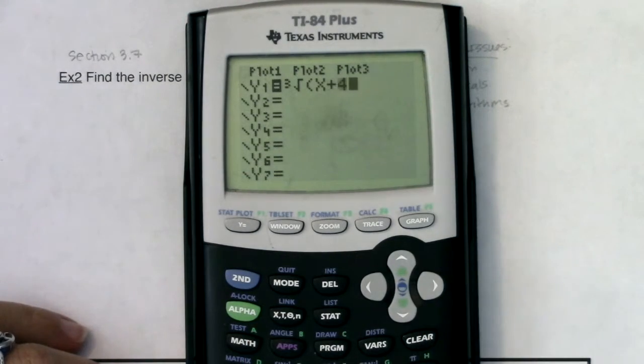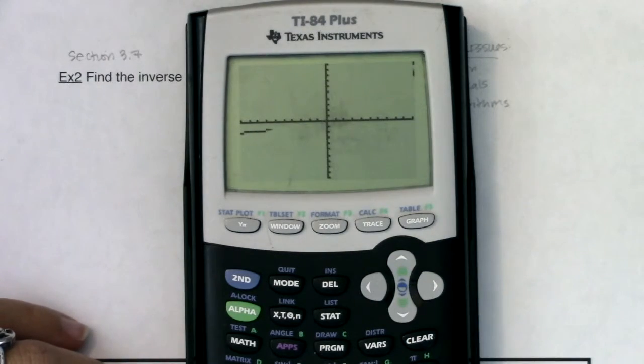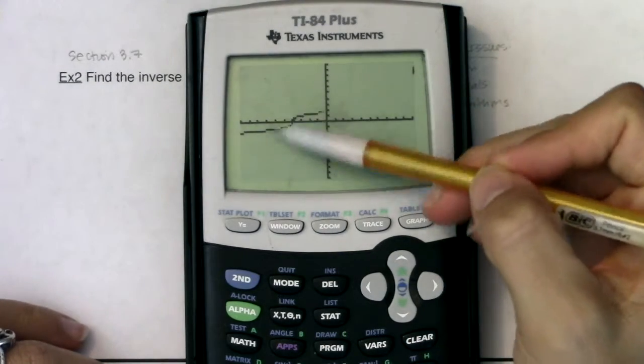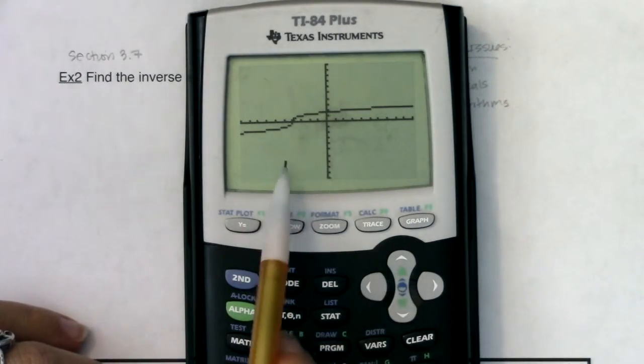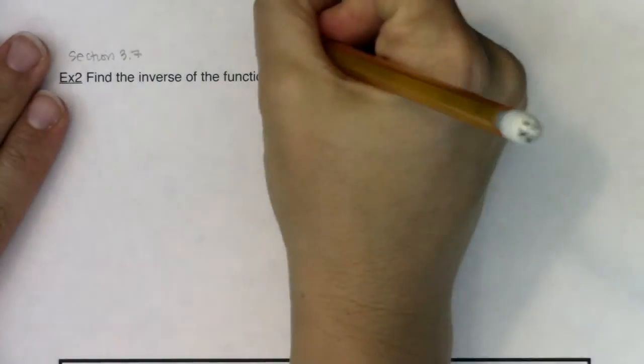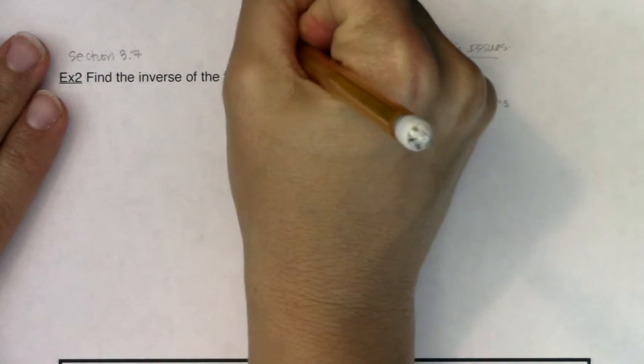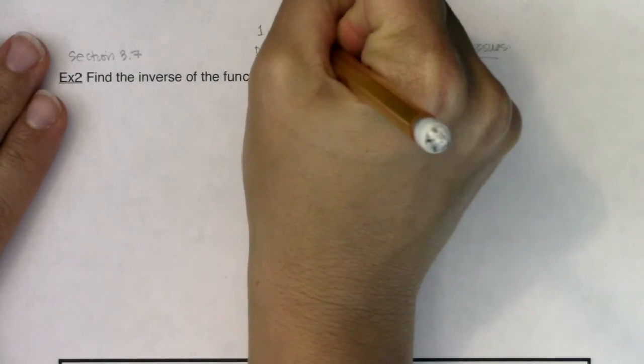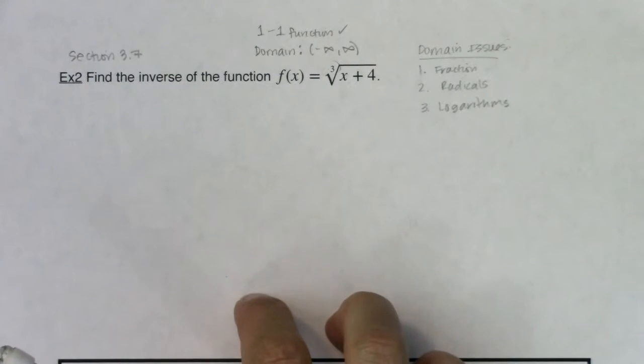Let's type in x plus four, and then let's go ahead and hit zoom six. Take a look at that. That does look like a function. It's passing the vertical line test. It also looks like a one-to-one function because it's passing the horizontal line test. I know that not only is its domain all real numbers, it is a one-to-one function.